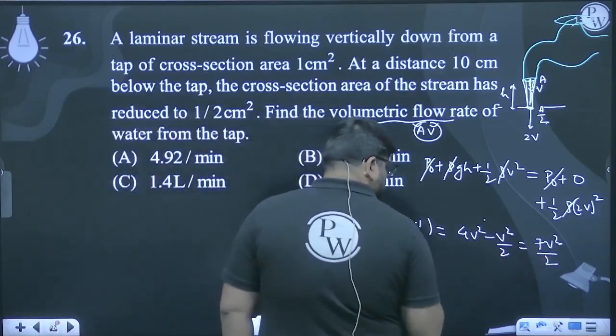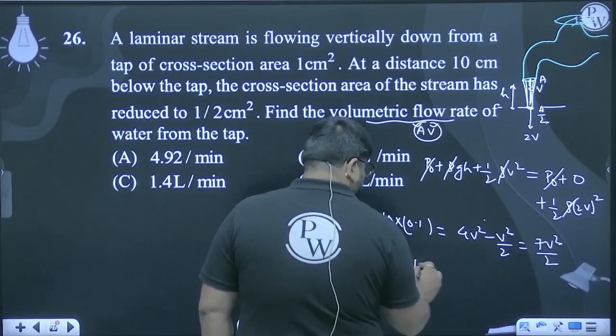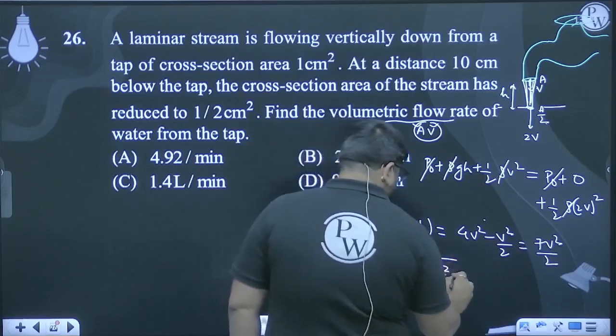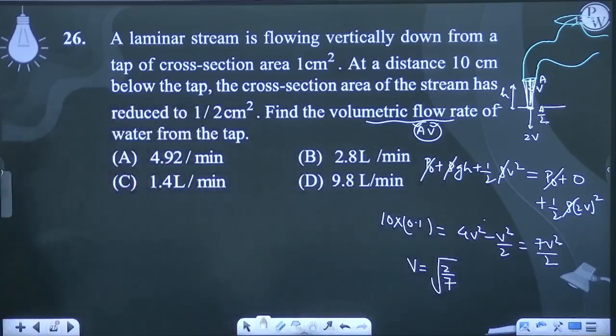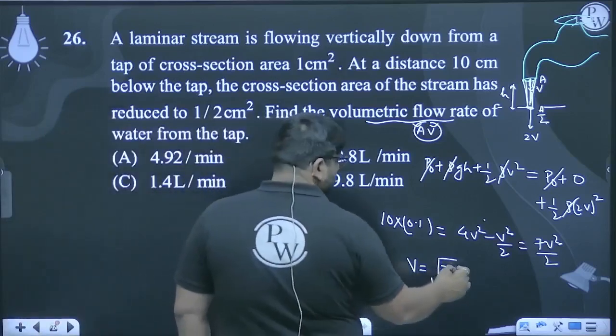So this becomes 1. So v will come out to be root(2/7). This is the speed at which fluid is coming out, and this is in meters per second.